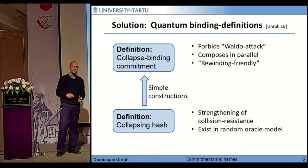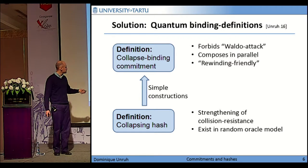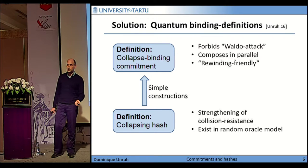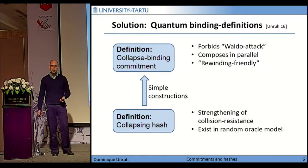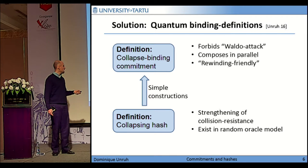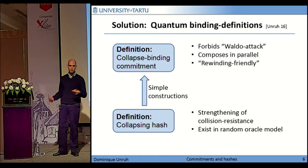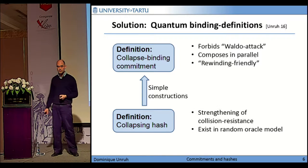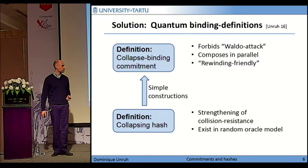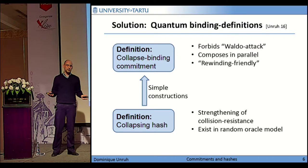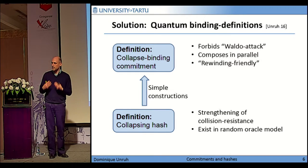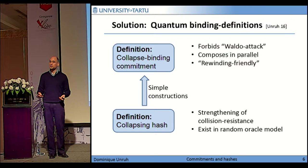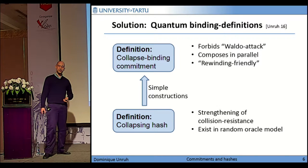But the question is then: do they exist? Well, that was the second contribution. Another notion was introduced — a security notion for hash functions called collapsing hash functions — and it was shown that with standard constructions from the classical world, a collapsing hash function implies a collapsed binding commitment. Collapsing is a strengthening of the notion of collision resistance, and I claim it is what we actually want from a hash function in a post-quantum setting. It was shown that such functions exist in the random oracle model.